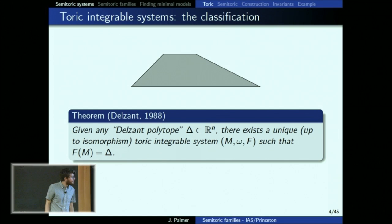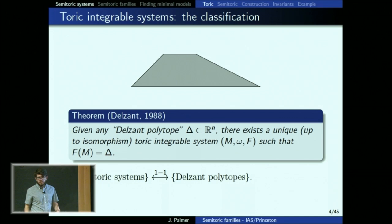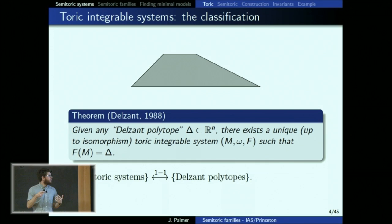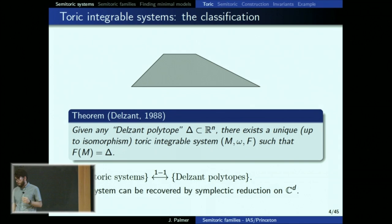Instead of a toric integrable system, we might as well say toric variety. This gives a very nice one-to-one correspondence between toric systems and Delzant polytopes. So if you're interested in toric systems, you can really be studying polytopes — the rational polytopes with integer inwards-pointing normal vectors to the faces give you combinatorial data. It's a very rigid situation, which is a very nice situation.